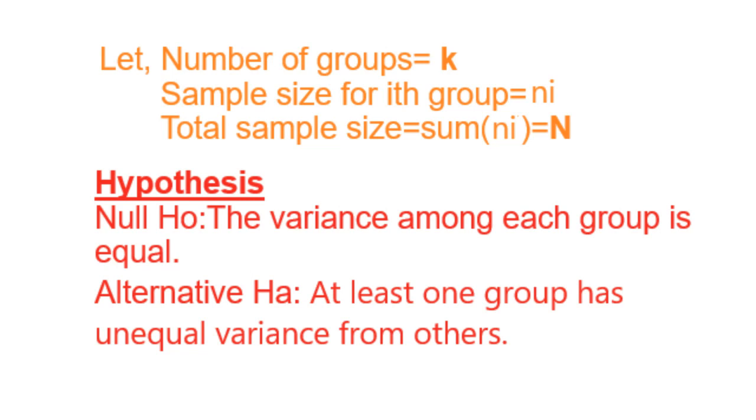The null hypothesis is that all groups have equal variances, against the alternative that at least one group has unequal variance from the rest.